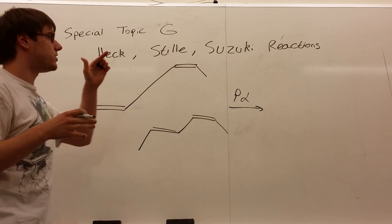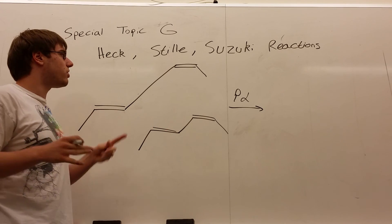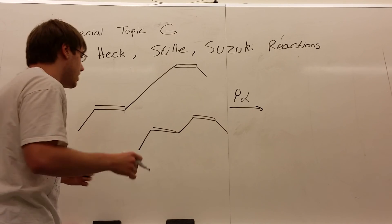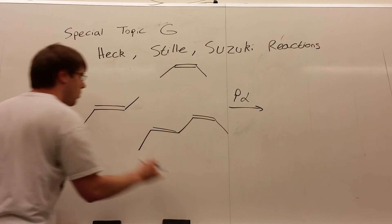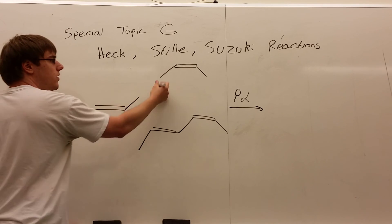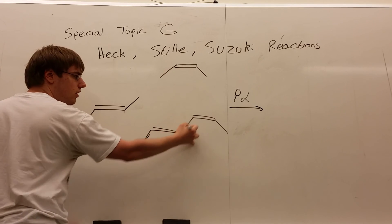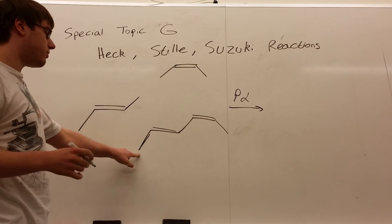The important thing to know about the Stille reaction, where the Heck said it always makes a trans double bond, the Stille reaction conserves the stereochemistry of both double bonds. Meaning, when I had these two separate, one of them was a trans double bond, and the other was a cis double bond. Well, I still have a trans double bond here, and I still have a cis double bond here. So this would be my final product.